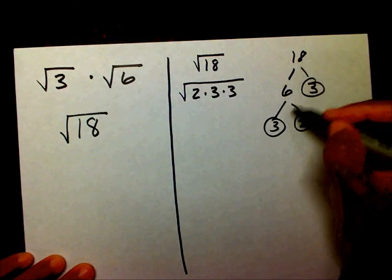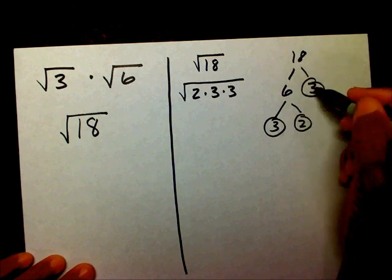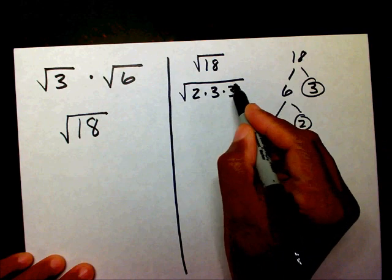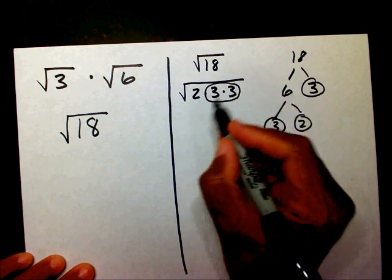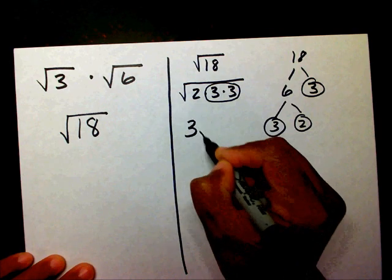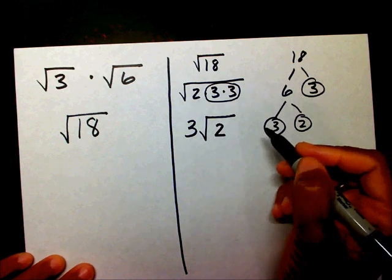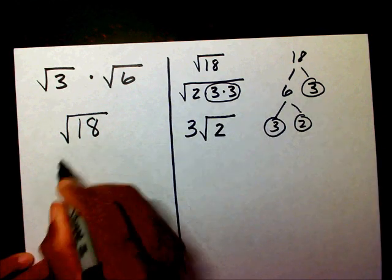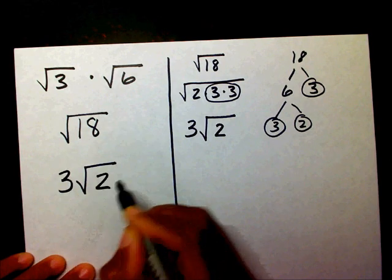I made a factor tree and I came up with the prime factorization of 2, 3, and 3. Now, the 3's, 3 times 3 is 9, 9 is a perfect square, radical 9 is 3, so that's going to go on the outside of the radical, and the 2 stays inside. So, we now know that radical 18 is really simplified down to 3 radical 2.